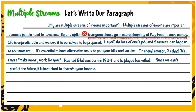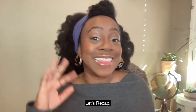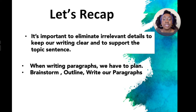Financial advisor Rashad Bilal states 'make your money work for you.' Rashad Bilal was born in 1984 and he played basketball. Since we can't predict the future, it is important to diversify your income. So which sentences do we eliminate? 'Rashad Bilal was born in 1984 and he played basketball' — although we mentioned Rashad Bilal for what he said about the topic, telling us when he was born or that he played basketball doesn't support our topic sentence.